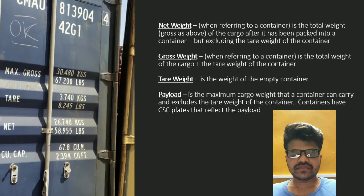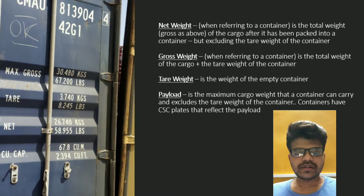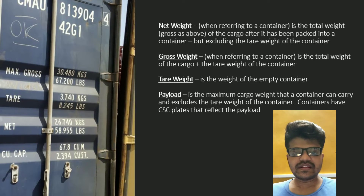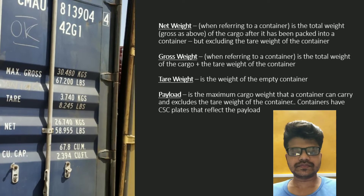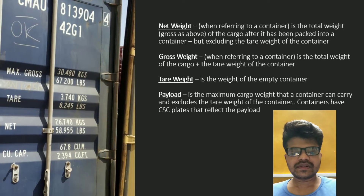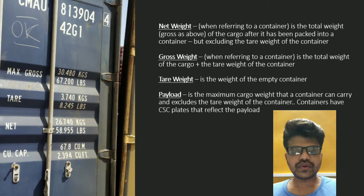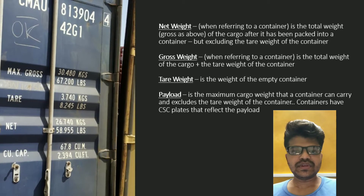The next is the tare weight. Tare weight is the weight of only an empty container. As you can see, the tare weight is 3,740 kgs, and in lbs it is 8,245 lbs. Lbs is nothing but pounds — as we say in normal language, it is a pound.